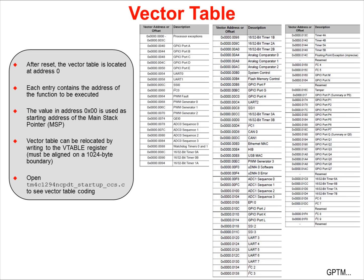After reset, the vector table is located at address 0. Each entry in the vector table contains the address of the handler or ISR to be executed. The value at address 0x00 is used as the default address of the main stack pointer. It is typical to relocate the vector table after bootloading the device, and this can be done by writing to the vtable register. The vector table must be aligned on a 1k byte boundary. You can open the startup.c file in CoComposer Studio for a complete view of the vector table.